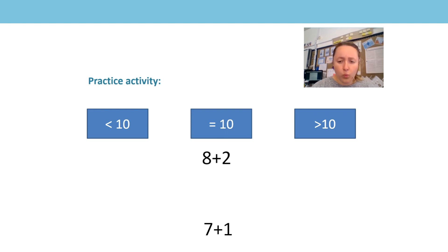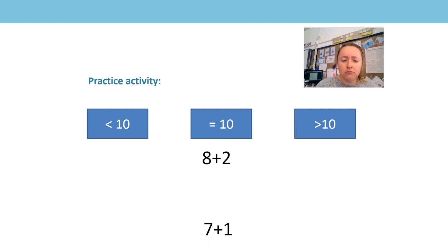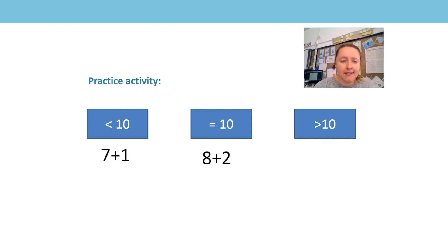7 add 1. Well, I know that 10 is made of 7 and 3, 3 and 7. But I haven't got 3 here, I've got 1. And 1 is less than 3, which means that this expression will be equal to a sum less than 10.